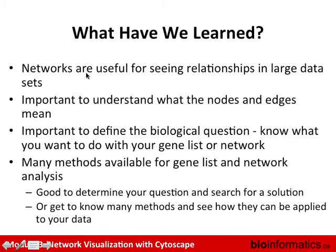The main point is that networks are useful for seeing relationships in large datasets. A key point is that it's important to understand what the nodes and edges mean — whenever you see a network, you have to ask what the circles and lines mean. We use the terminology 'nodes' for the circles and 'edges' for the lines. We'll see more tomorrow about different biological questions you can answer using network information.